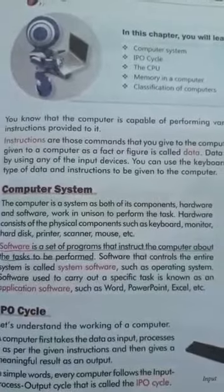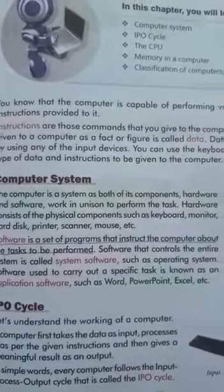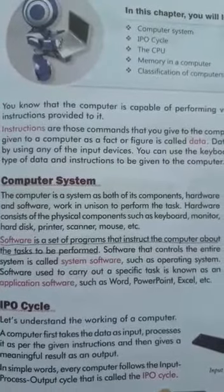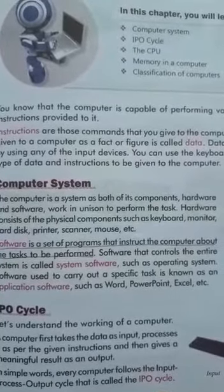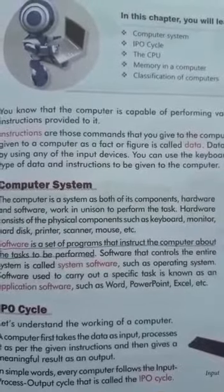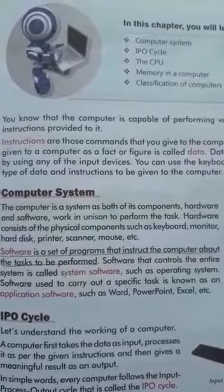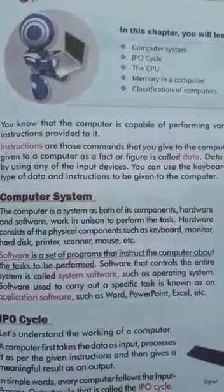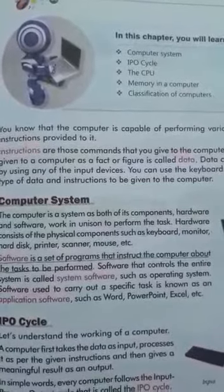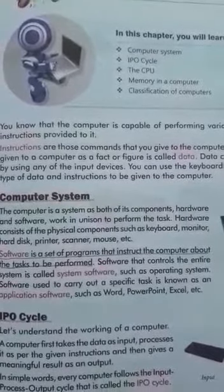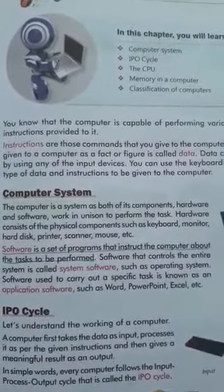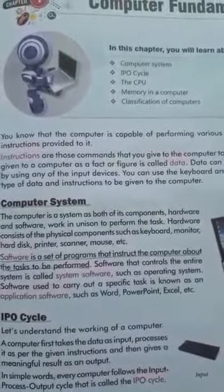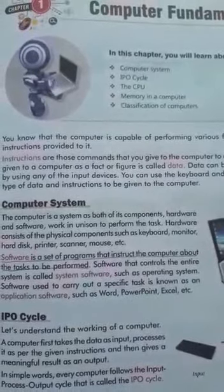A computer system consists of both its components: hardware and software. Hardware consists of the physical components such as keyboard, monitor, hard disk, printer, scanner, mouse, etc.